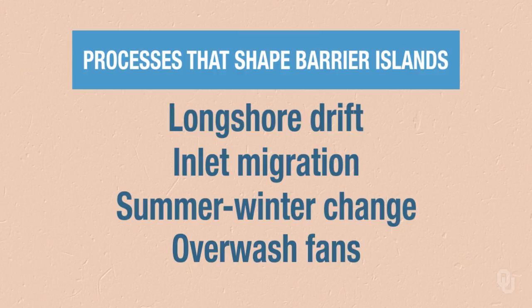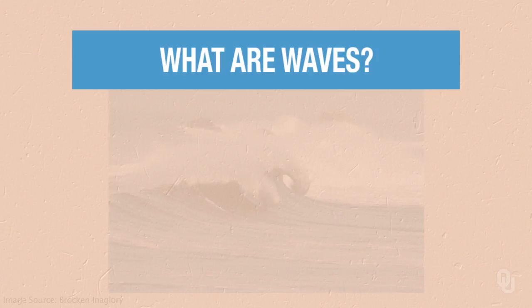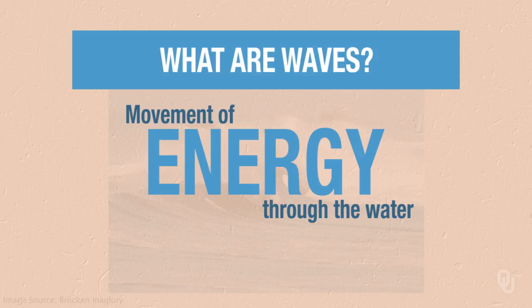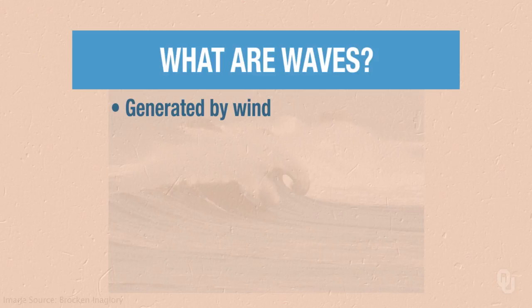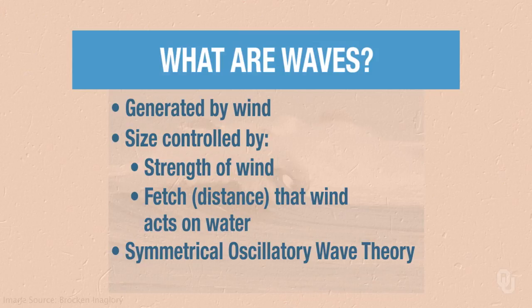Before we talk about longshore drift, we need to talk a little bit about waves. A lot of students think waves are the movement of a current through the water, but they're not. They're the movement of energy through the water, not a current of water. They're generated by wind. The size of waves is controlled by the strength of the wind and the fetch — the distance that the wind acts on the water. There's a theory called the symmetrical oscillatory wave theory that explains how waves move and form.